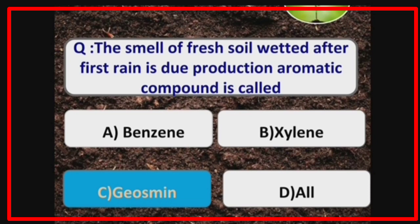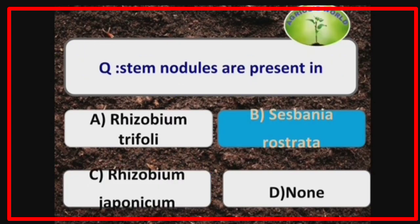The smell of fresh soil wetted after the first rain is due to the production of an aromatic compound called geosmin. Stem nodules are present in Sesbania rostrata, which is a stem-nodulating plant.